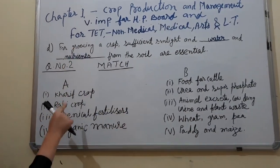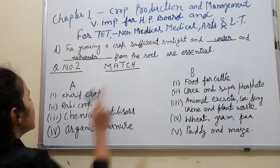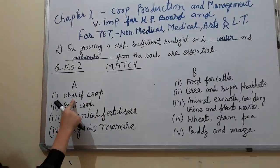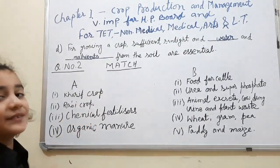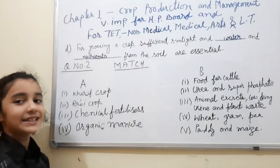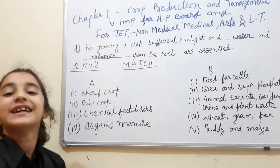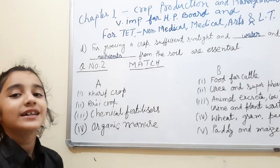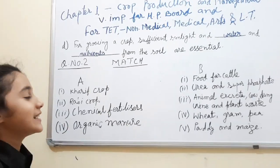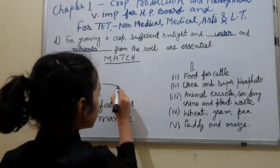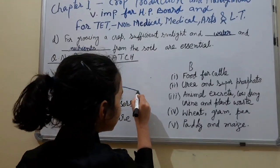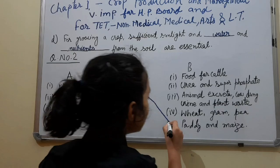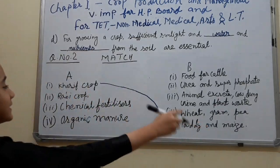Now we have to match column A with column B. What will match with the kharif crop? I'll give you 3 seconds. Your time starts now. 1, 2, 3. Your time is up. The correct answer to it is: paddy and maize.